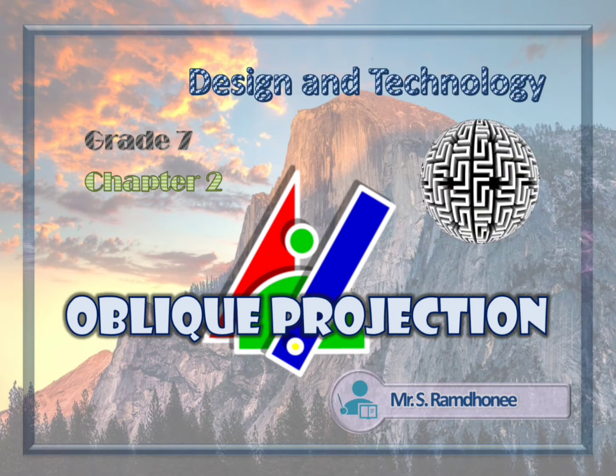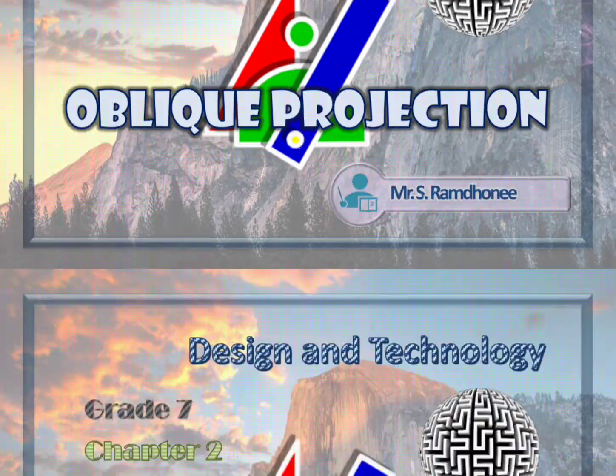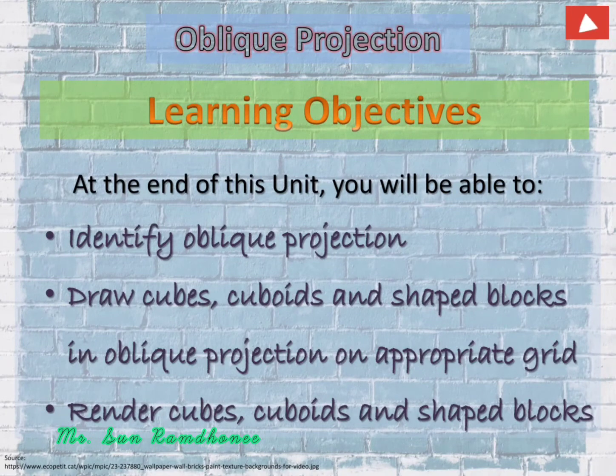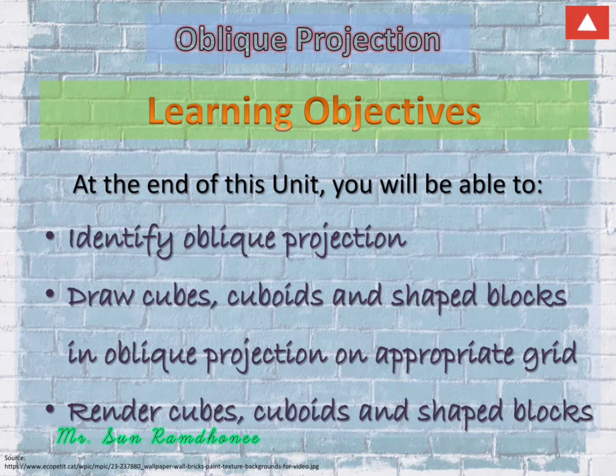The learning objectives are as follows: you'll be able to identify oblique projection, draw cubes, cuboids and shape blocks in oblique projection on appropriate grid, and finally render cubes, cuboids and shape blocks.